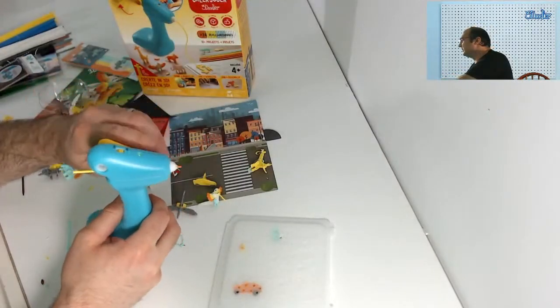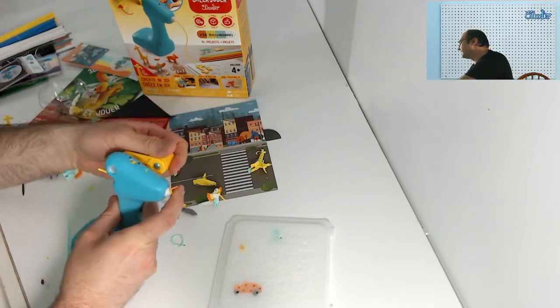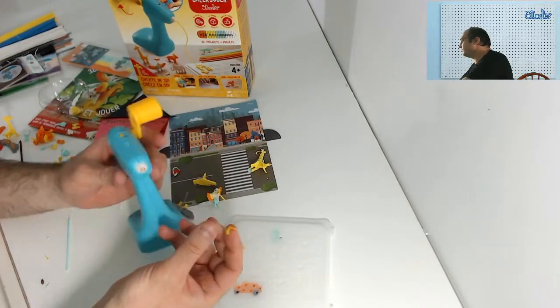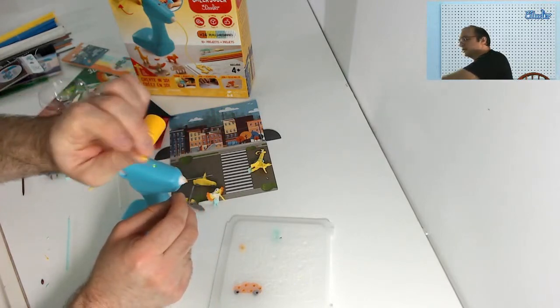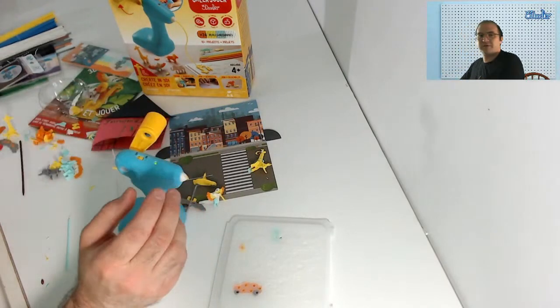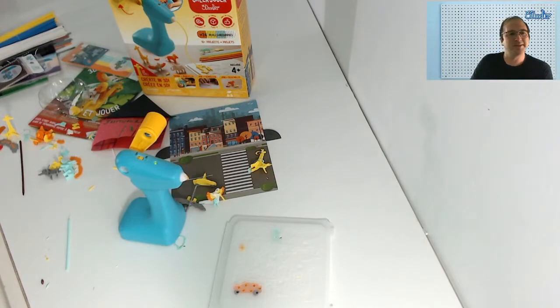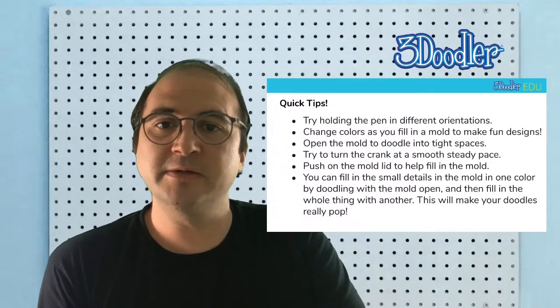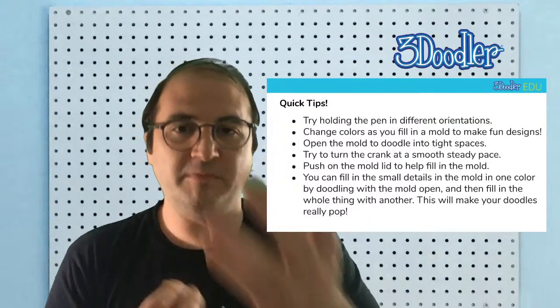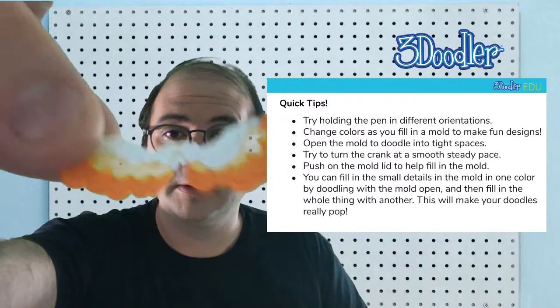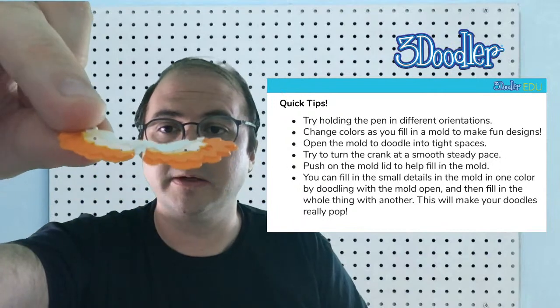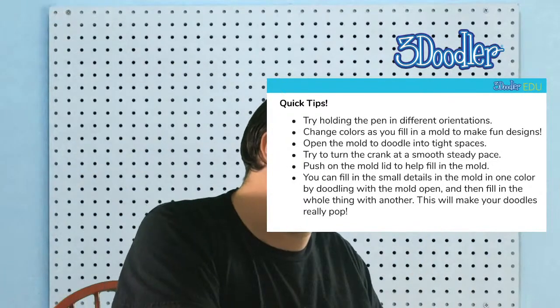I think I just saw someone asking if this is hot. This is not hot. This is the same material as the 3Doodler Start, so it's not hot. It's warm and it's not going to burn you, whereas the 3Doodler Create Plus is very hot. What else? I mentioned the small details, how you can fill in the molds and different small details. That's how you can get things like wings where you have multiple colors.